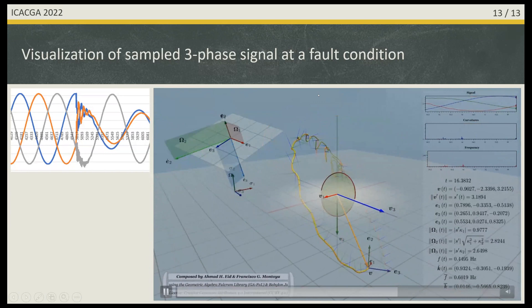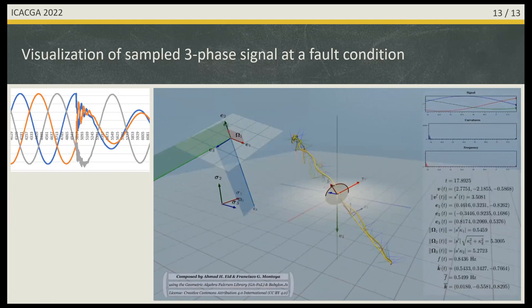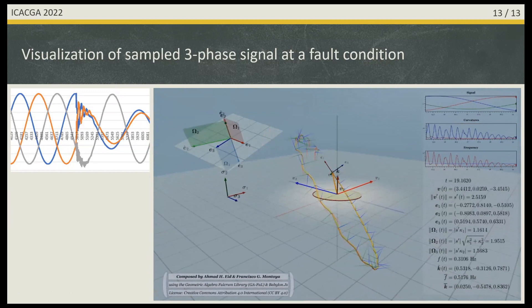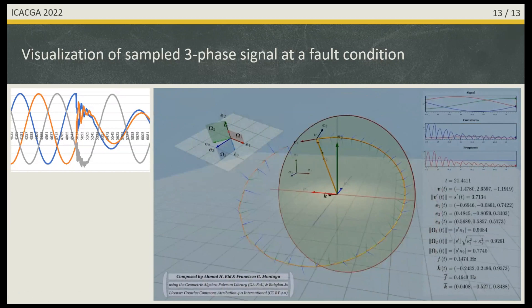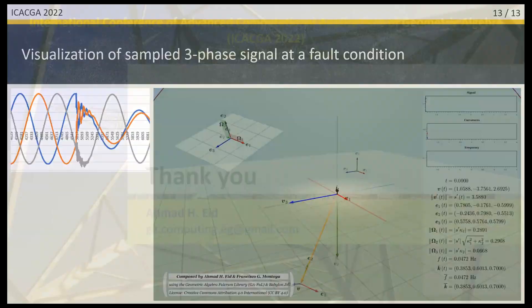This video shows real data and how this changes at a fault condition. The signal was very regular at first, then the fault condition occurs and the behavior changes completely. A student can understand much more visually using this technique. The instantaneous geometric frequency can be used along with the Clarke transformation. If we can predict where the vector will be next, maybe using a Kalman filter or neural network, we can extract more information from the signal using this geometrically holistic approach. Thank you very much.